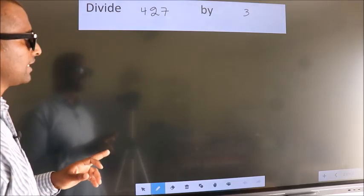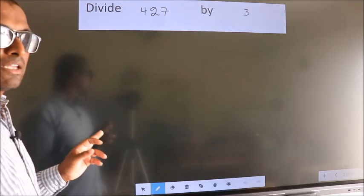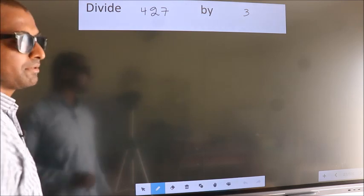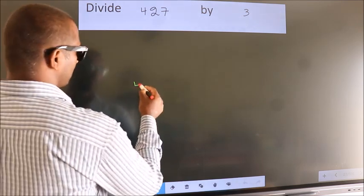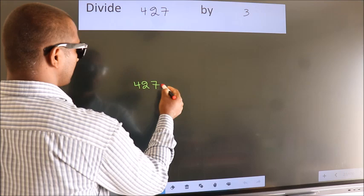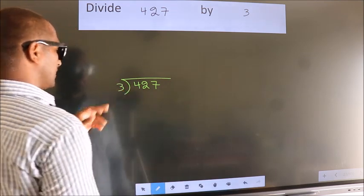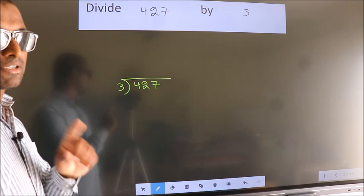Divide 427 by 3. To do this division, we should frame it in this way. 427 here, 3 here. This is your step 1.